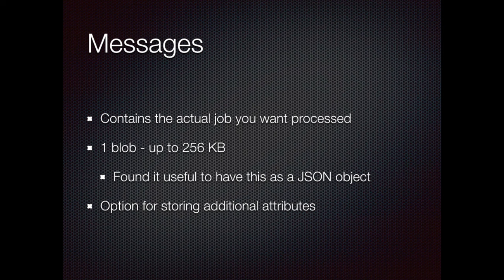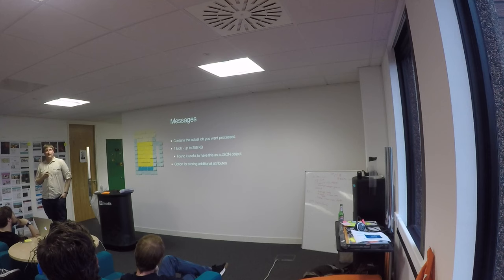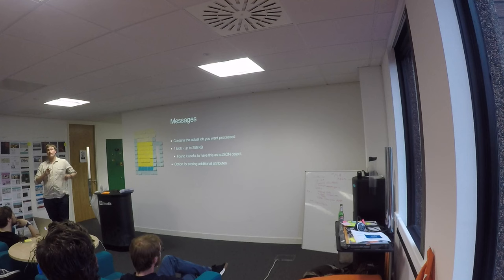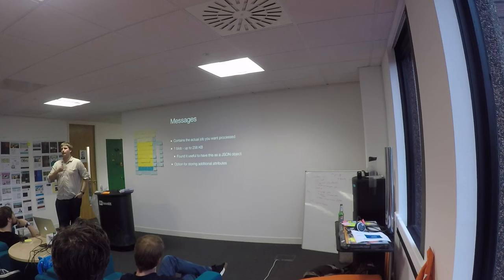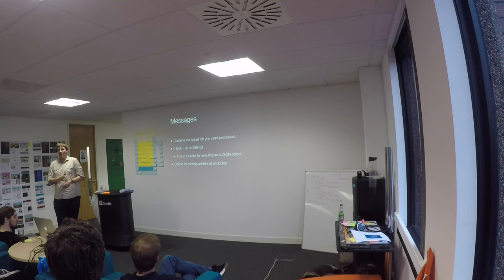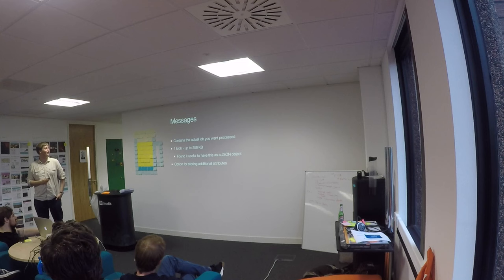Messages sit on the queue and represent the actual job you want processed - they're essentially a blob of data. In Amazon SQS you can have them up to 256 kilobytes; you can go beyond that by tying it in with S3, though I know the Java SDK allows that more easily than the PHP one. We've defined our messages as JSON objects so all our queue messages have a standard format, with a data attribute and an expiry time attribute. We should have used the built-in Amazon message attributes option - it can store up to 10 attributes - but we didn't realize that was available at the time, so we wrote our own format.